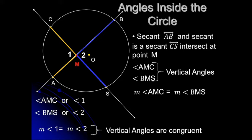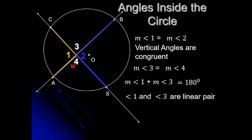The measure of vertical angles are equal — vertical angles are congruent. Angle AMC can be named as angle 1, and angle BMS can be named as angle 2. So the measure of angle 1 is equal to the measure of angle 2, because vertical angles are congruent. Similarly, angle 3 and angle 4 are also congruent, so the measure of angle 3 is equal to the measure of angle 4.